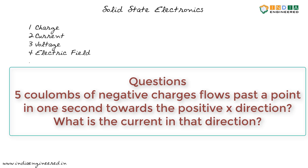The question is: five Coulombs of negative charges flows past a point in one second towards the positive x direction. What is the current in the positive x direction?